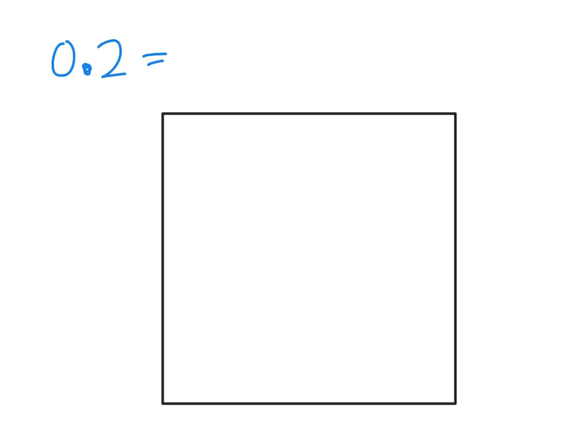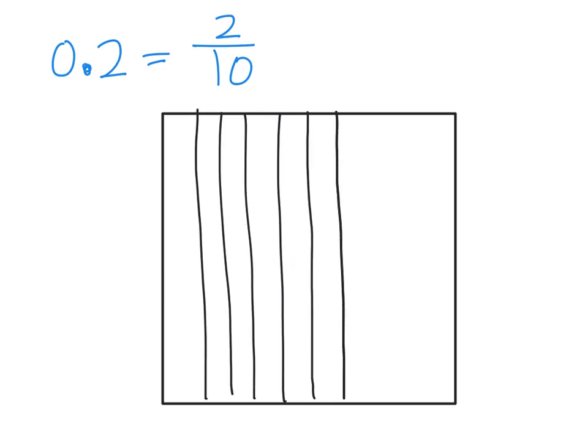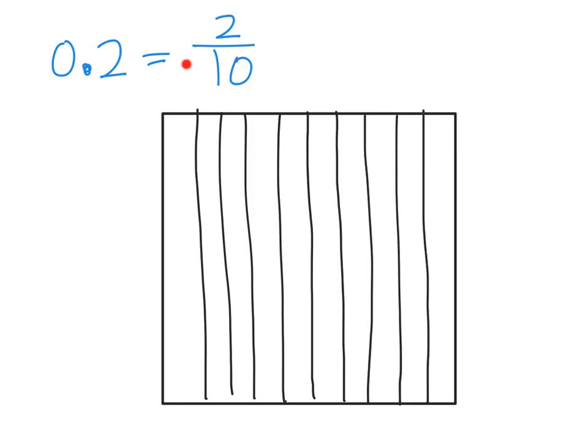Let's start by zooming in and taking a look at just one square. We're going to call that square one whole unit. Suppose we wanted to model zero point two — that's two tenths. The first thing we want to do is cut this into ten strips. I'm going to do my best and cut this into ten strips: one, two, three, four, five — and then one, two, three, four, five. Those don't look perfectly equal, but we're estimating here.